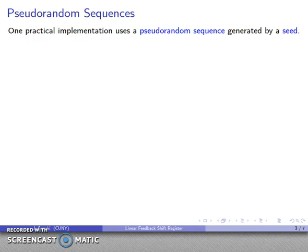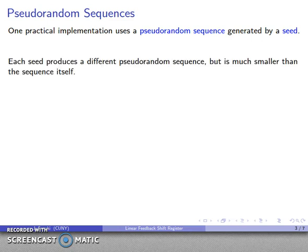However, one possibility is to use what's known as a pseudorandom sequence that's generated by some sort of seed, some sort of initial value. And the idea is that we can use this seed to generate a pseudorandom sequence. Every seed is going to generate a different sequence, but what makes this work is that the seed is much, much, much, much smaller than the sequence itself. In principle, the sequence could contain an infinite number of values, and the seed might just be a fairly small number.